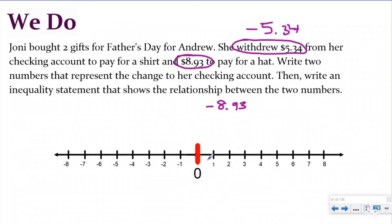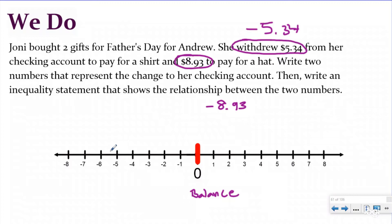We're going to view zero here as her bank account balance — whatever her balance was. And then to pay for the shirt, she withdrew $5.34, so I need to go backwards because she's losing money. My scale is one unit, which means I don't have the cents split up on my number line, so I'm going to have to kind of guesstimate where that would go. I know I'm going to have to go backwards to five, and then $5.34 would be less than $5.50 which would be a half, so I'm going to put it a little bit before that — about right here. And this is how much she used to pay for the shirt.